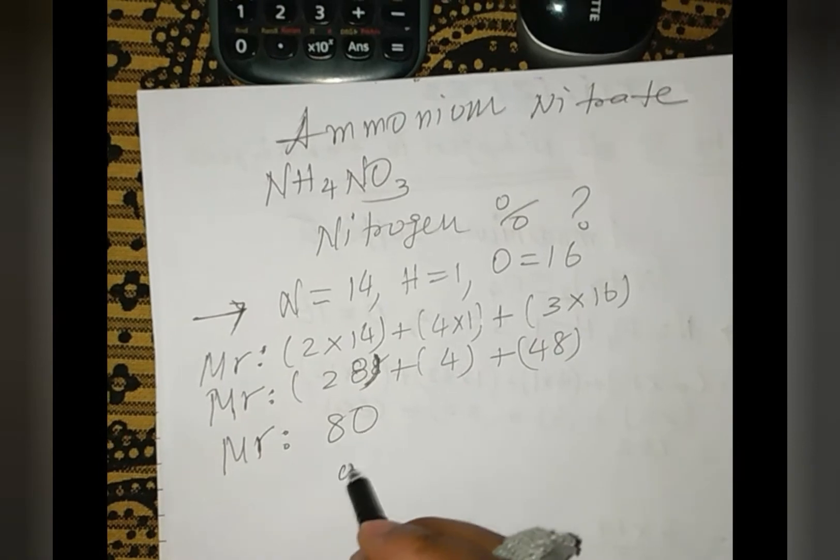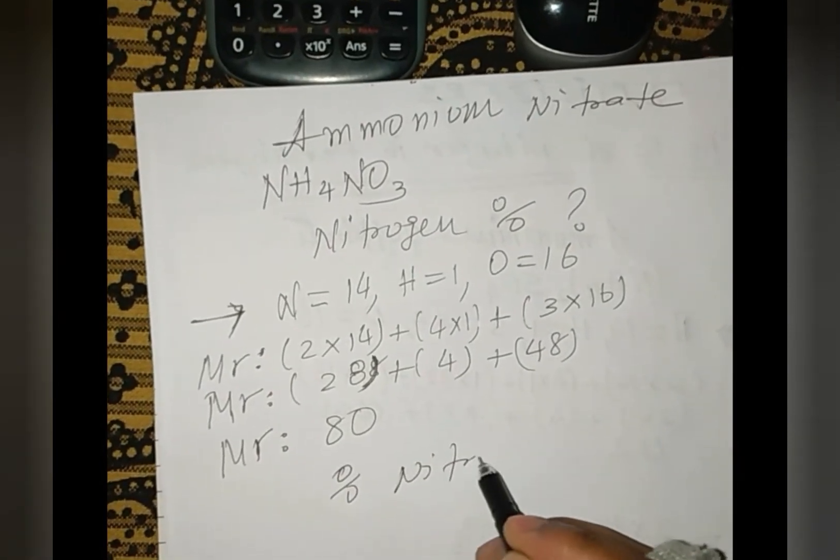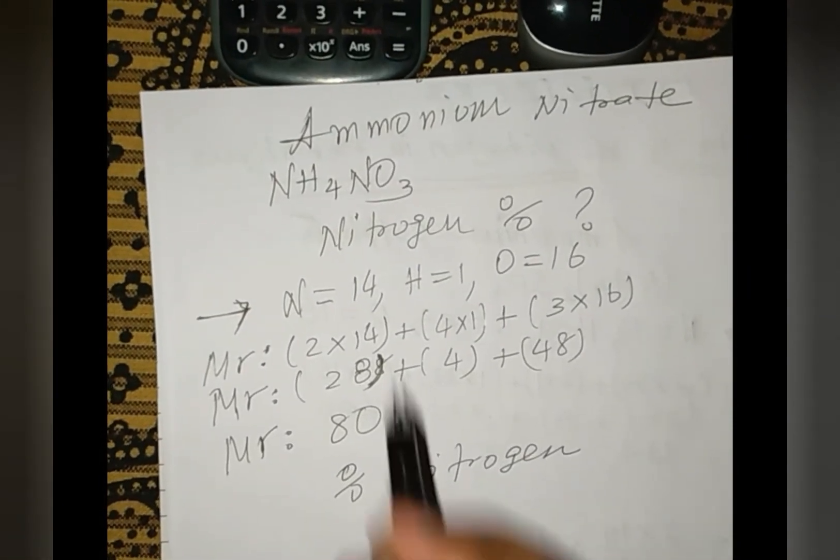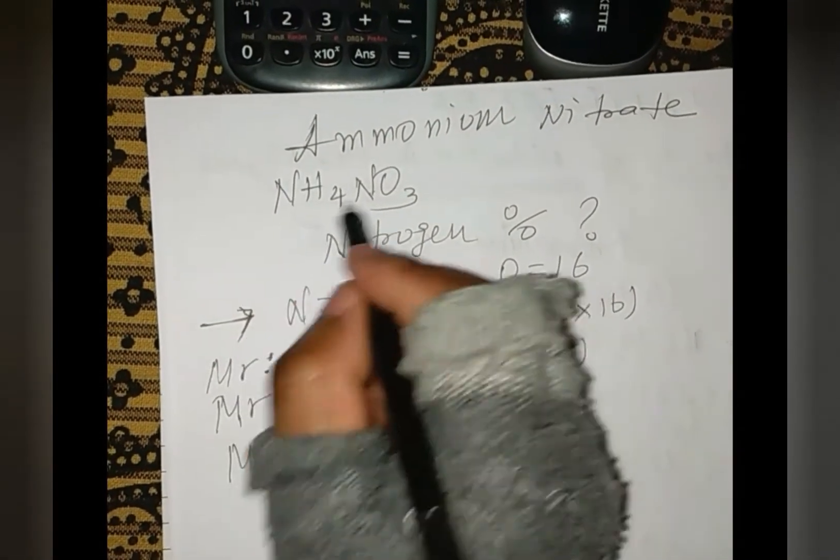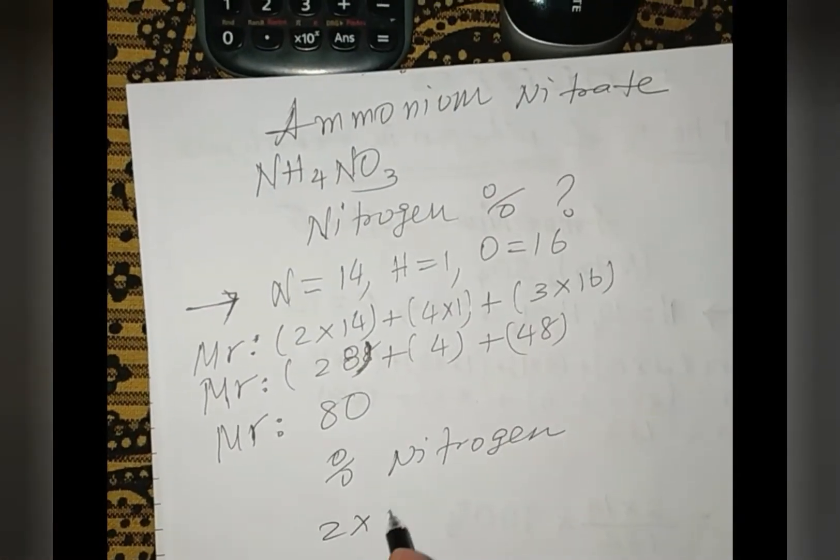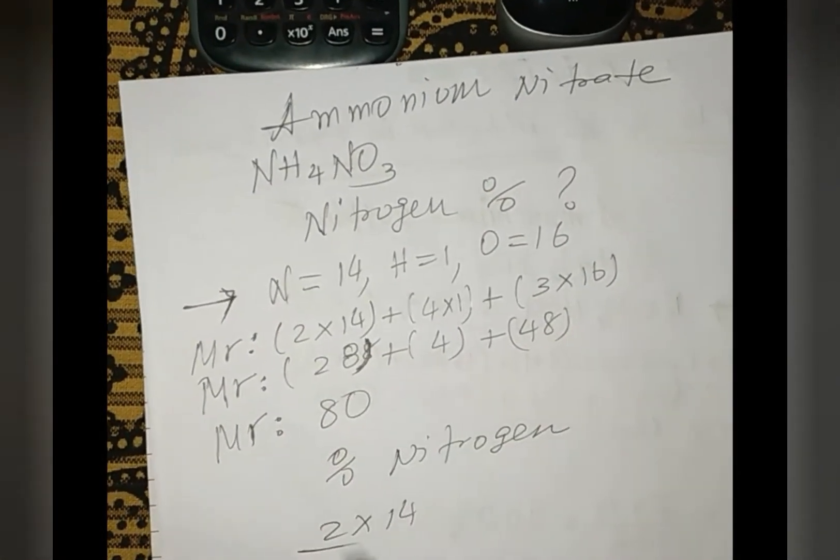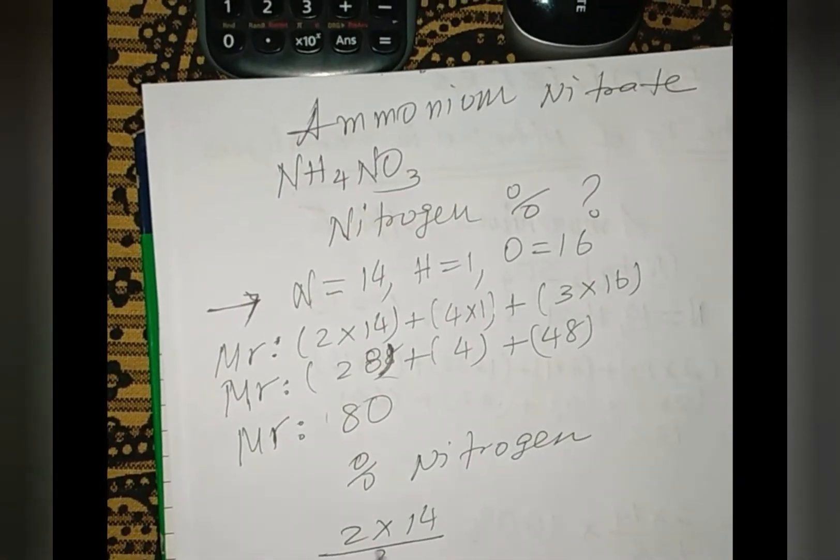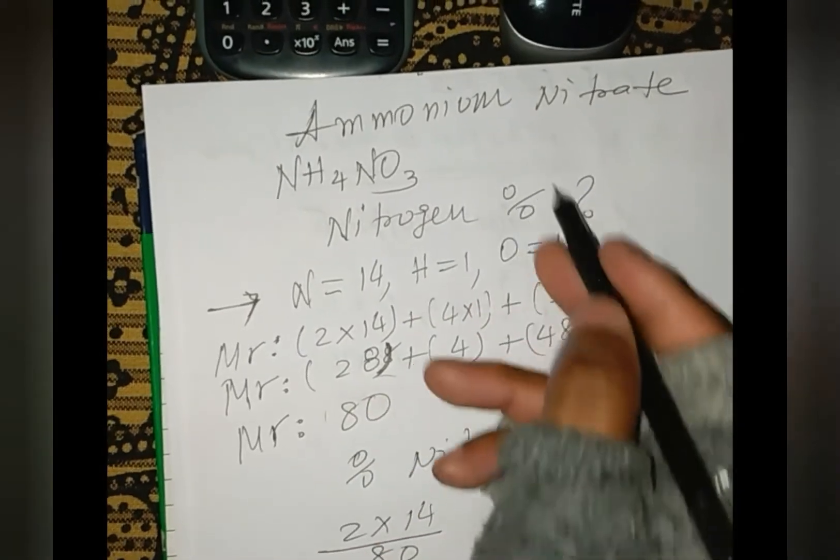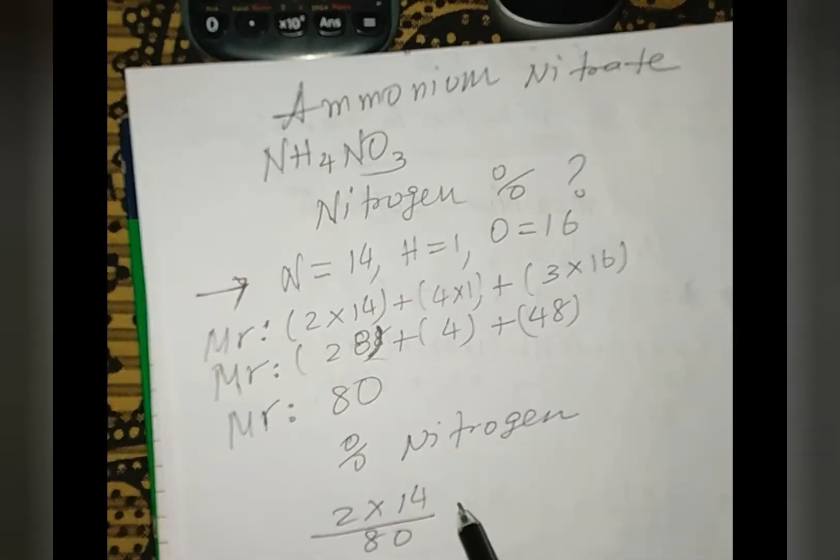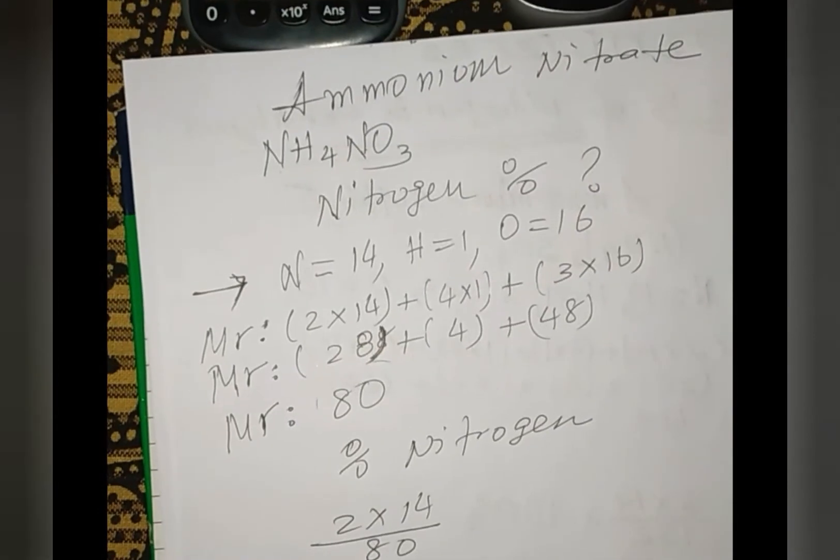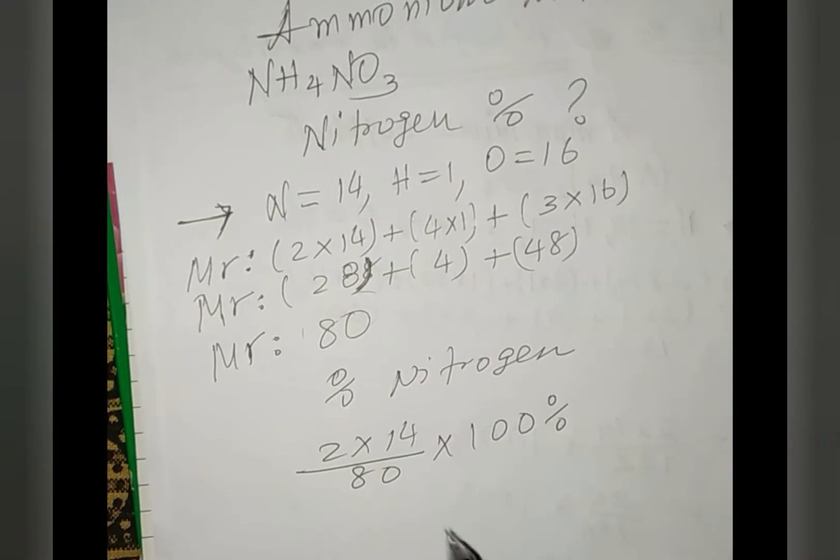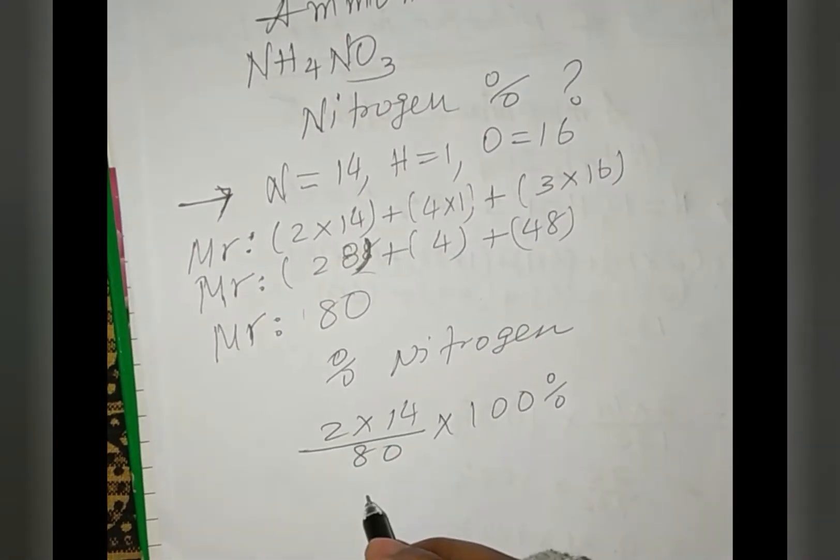Now, how to find the percentage of nitrogen? The procedure is exactly the same. We see how many moles of nitrogen are in here - there are two moles. We take this number and multiply by the mass number of nitrogen: two times 14, divided by the total molecular mass which is 80, times 100% to calculate the percentage.